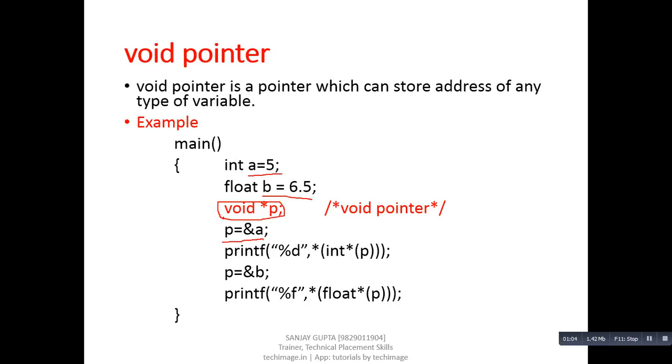Now if we want to print the value of a with the help of p, then first we have to type cast p into an integer pointer. Because p is a void pointer, it doesn't know how many bytes it has to dereference.